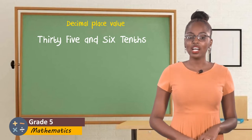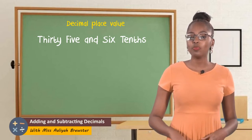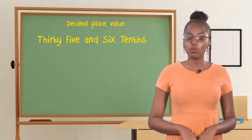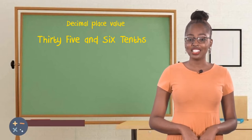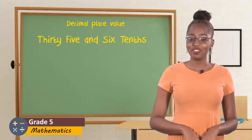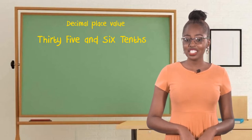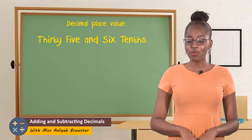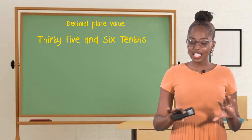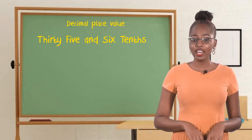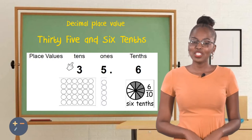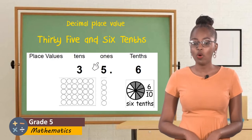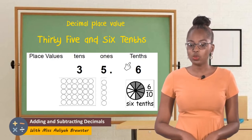So let's take a step back and try to understand exactly what place values are. On the screen, you would notice we have the number thirty-five and six-tenths. I did not say thirty-five point six. I did not say three-five point six. How we say the name of this number, we say thirty-five and six-tenths. The place value of three in this number would be tens, while the place value of five would be ones, and the place value of six would be tenths.